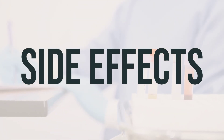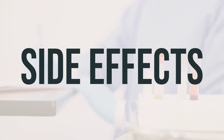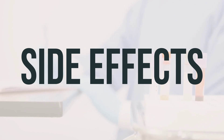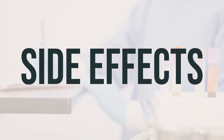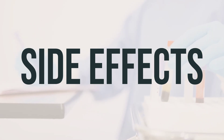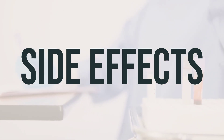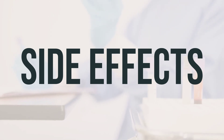Some common side effects of Elatec Vial may include nausea, vomiting, headache, stomach pain, constipation, diarrhea, or mouth sores/ulcers. If any of these effects persist or worsen, it's important to inform your doctor or pharmacist promptly.